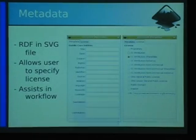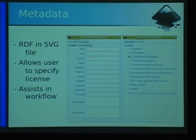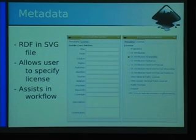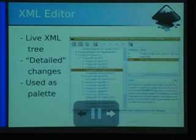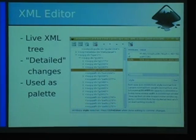Inkscape also supports putting RDF metadata inside the SVG file, which is a really neat feature for large art shops. They need to track: where did this document come from? Do I have a license to use it in Spain? What license did it come with? When you put the wrong graphic on a billboard it's hard to take it down, so having that information inside the file is very important for operations with complex licensing agreements. We also include a good selection of Creative Commons licenses — just a little encouragement.